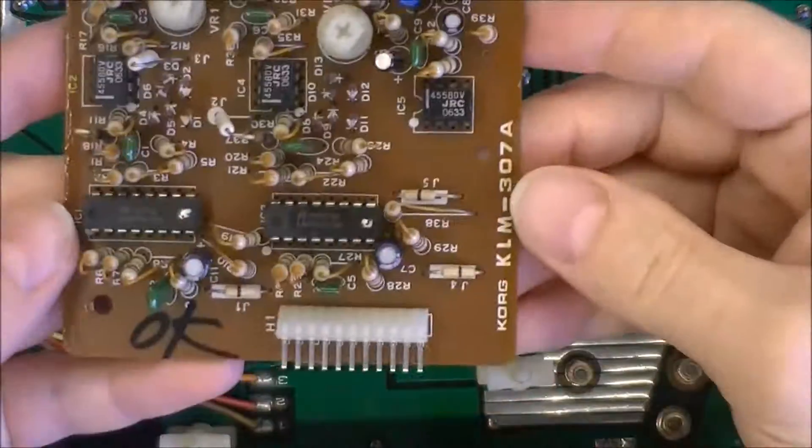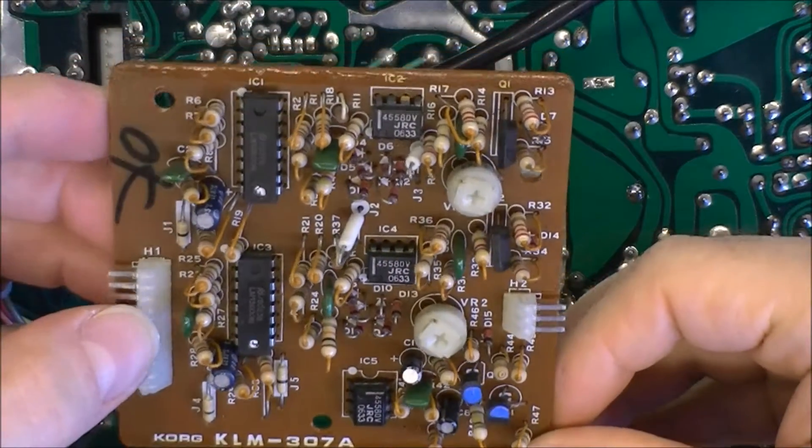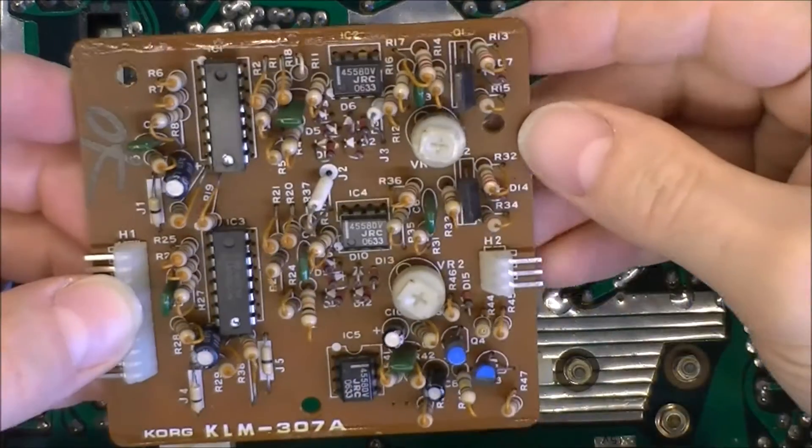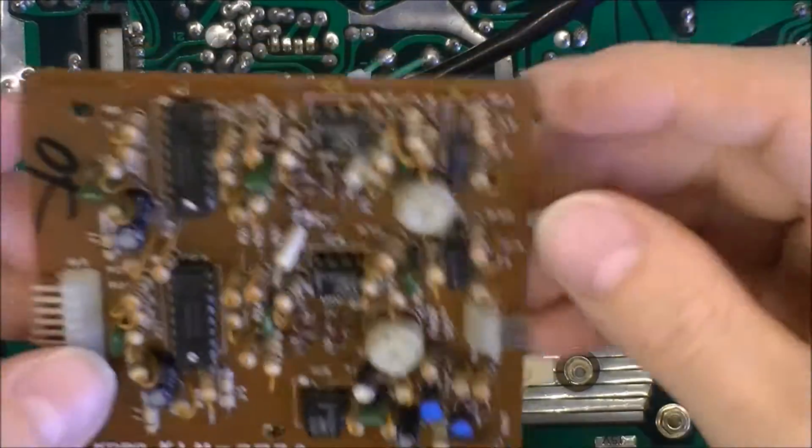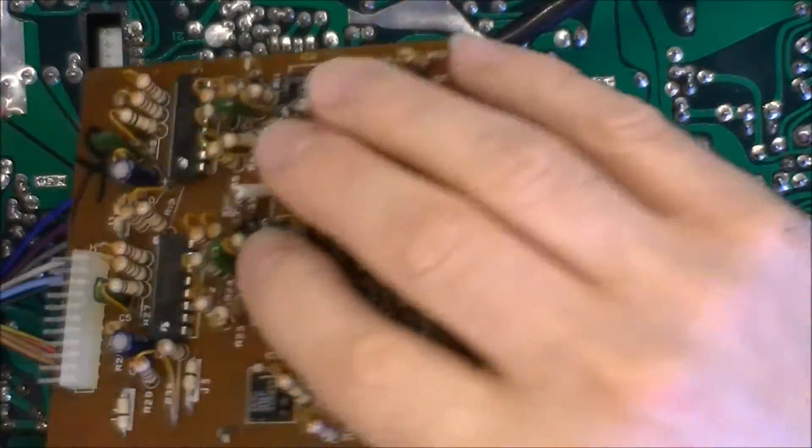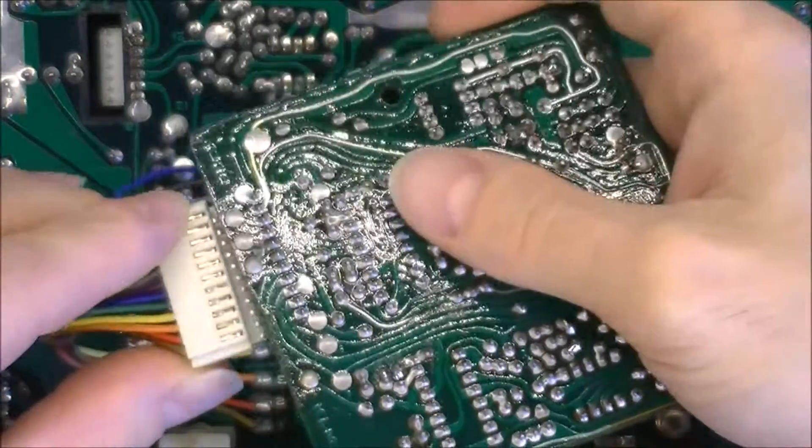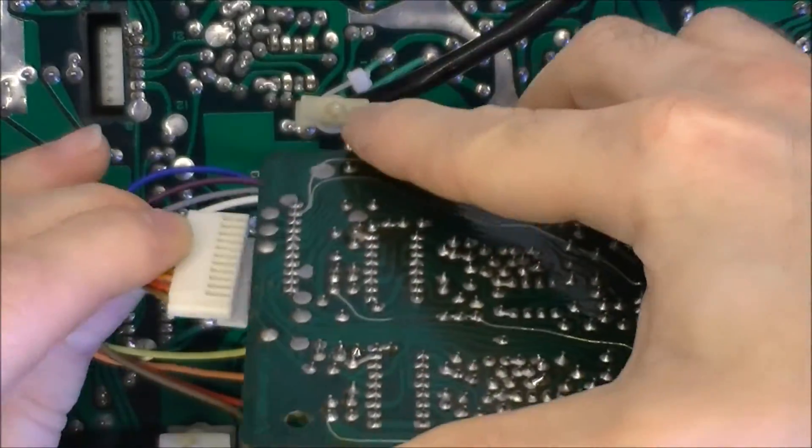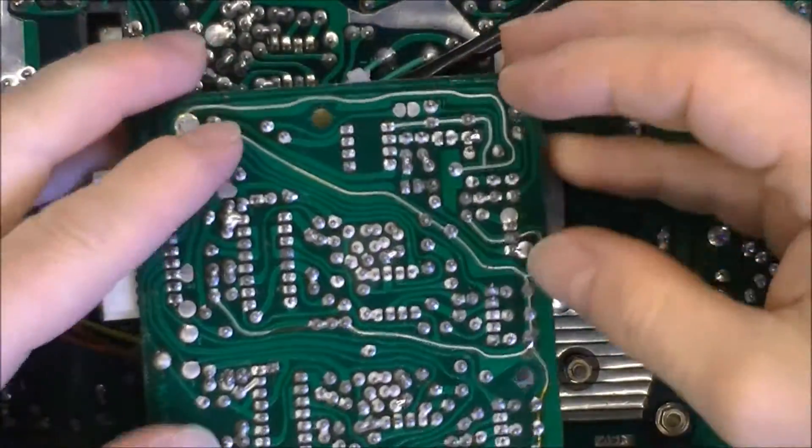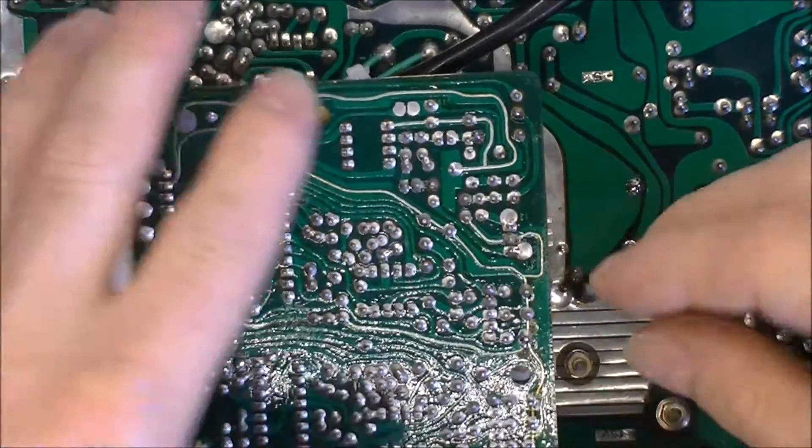So this daughter PCB has more vertical mount resistors, lots of them, nothing special. I need to remember which way it was installed. The plug wants to come this way, so I guess this is the proper way to insert it.